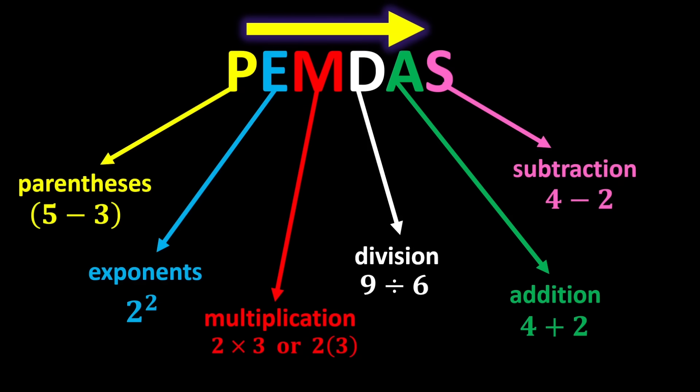Multiplication and division have equal priority, so whenever both appear in an expression, move from left to right and perform whichever you reach first. This rule also applies to addition and subtraction. With this explanation, let's solve a few examples so we can understand PEMDAS better.